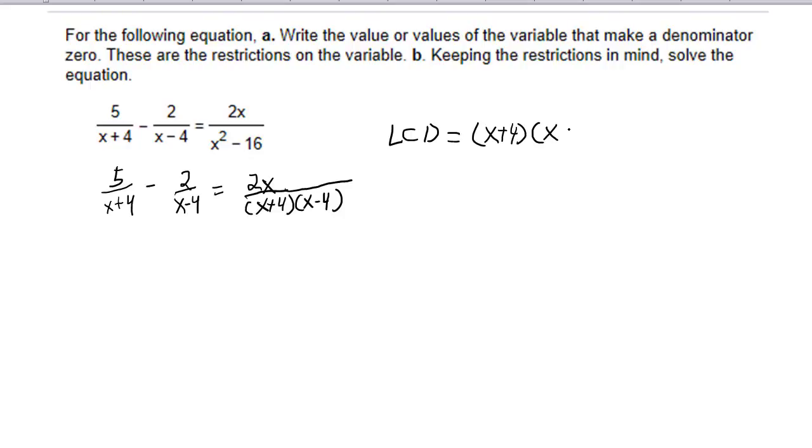And I'm going to multiply on both sides of the equation by x plus 4 times x minus 4. Now, what this means for us is that every term will get multiplied by x plus 4 times x minus 4. So, let's do that.